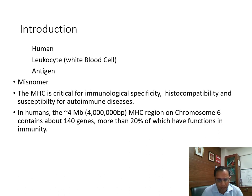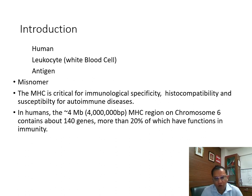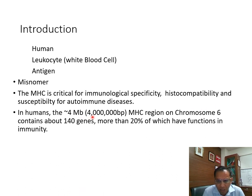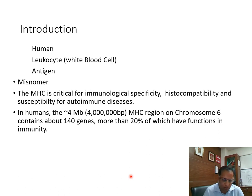MHC or the major histocompatibility complex is critical for immunological specificity, histocompatibility, and susceptibility for autoimmune diseases. In humans it is the region on chromosome 6 — specifically the 6p, that is the small arm of chromosome 6 — which occupies 140 genes, more than 20% of which have functions in immunity. So it is a very important region.